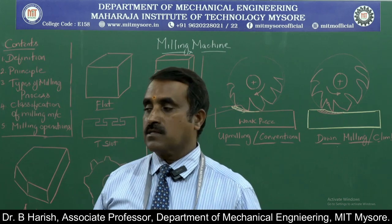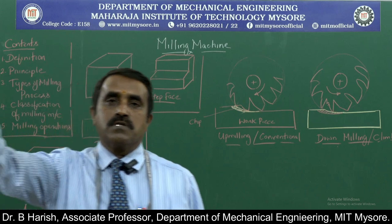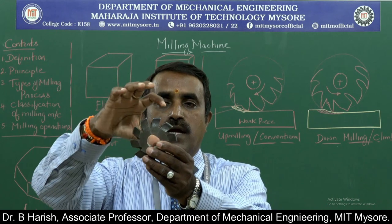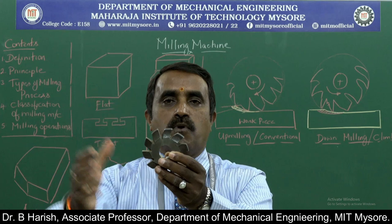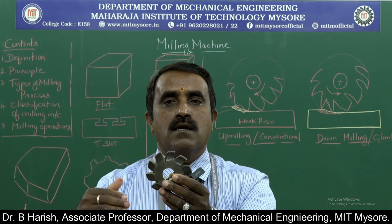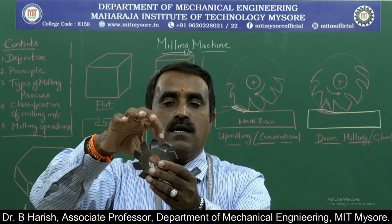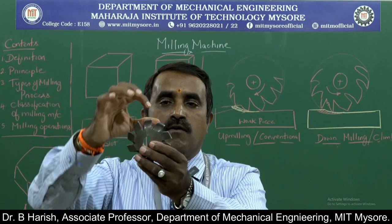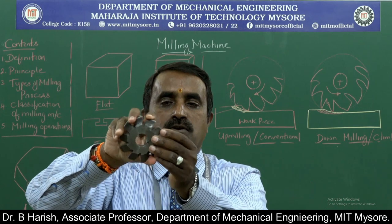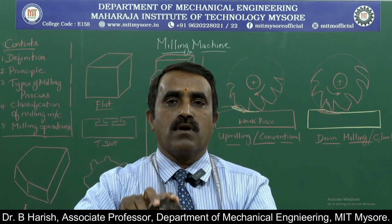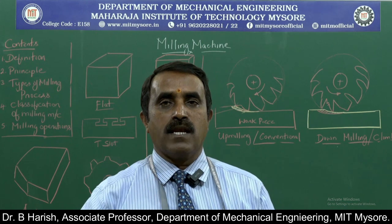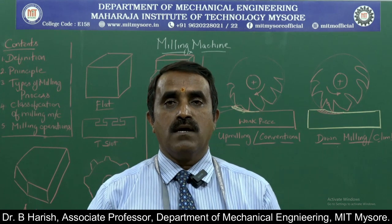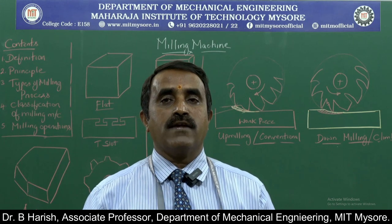The second type is the multipoint cutting tool. Every tip acts as a cutting edge. A multipoint cutting tool has more than one cutting edge. This is a milling cutter — every tip acts as a cutting edge and as it rotates, material is removed. This is the type of tool used in a milling machine to remove excess material and give the required shape and size.